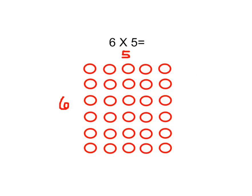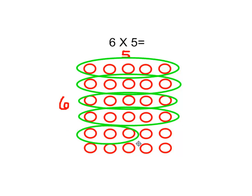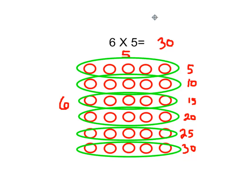Now, I might already know my multiplication, but if I don't, I can use this to help me figure out how many pieces I have. So here I have a row of 5, another row of 5, and I have 6 of them all together. To find out how many pieces are in this array for 6 times 5, I simply count up by 5's: 5, 10, 15, 20, 25, and 30. So 6 rows of 5 is 30, and that is how the multiplication fact shows that 6 times 5 is 30 — 6 groups of 5.